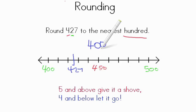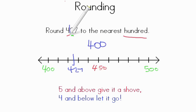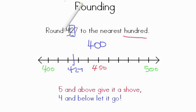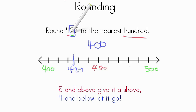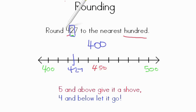To figure that out, all I really had to do was look at my tens. So if I'm rounding to the hundreds, I need to look at my tens. If I'm rounding to the tens, I've got to look at my ones. If I'm rounding to my thousands, I have to look at my hundreds.